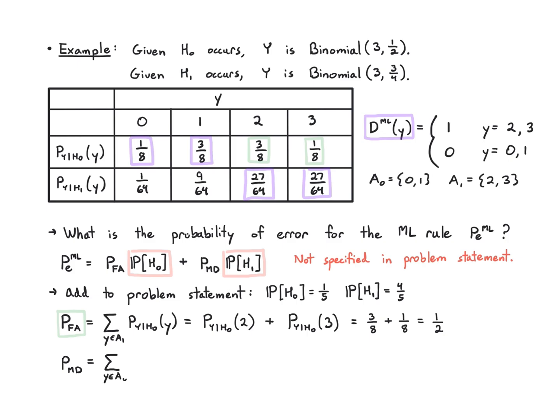For misdetection, I'm going to get a very similar thing, except now I'm summing over A₀, the conditional PMF given H₁. So in orange I have 1 over 64, that is the same kind of idea, and then plus 9 over 64, I'm going to get 5 over 32 overall.